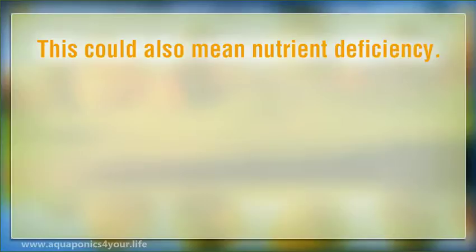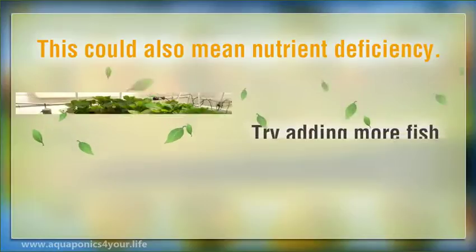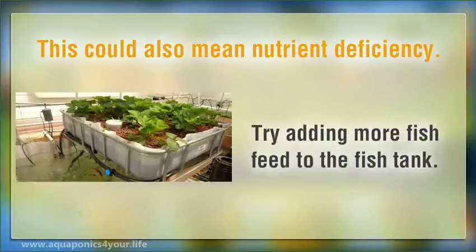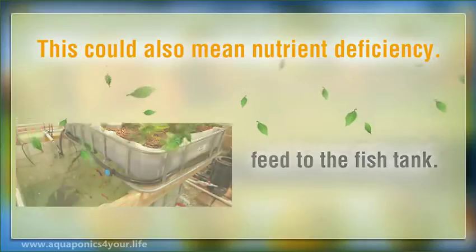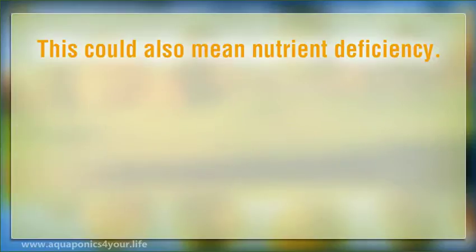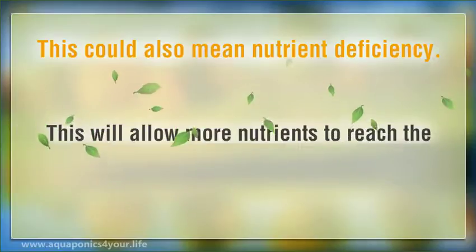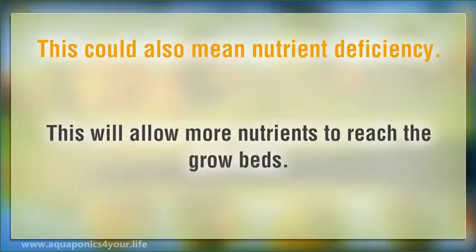Browning or wilting could also mean nutrient deficiency. Try adding more fish feed to the fish tank — this will allow more nutrients to reach the grow beds.